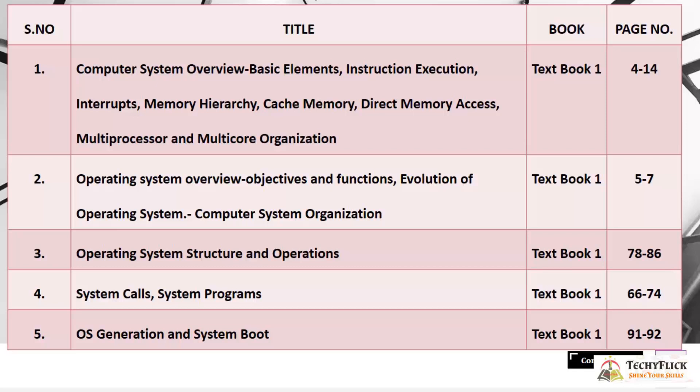These topics cover hardware, memories, and accesses in computer architecture. The page numbers in this textbook are pages 4 to 14. The next topic is Operating System Overview, which is the next half of the unit.